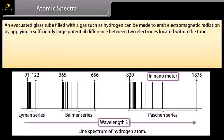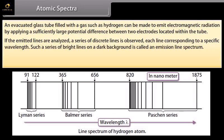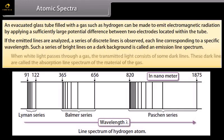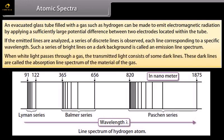Atomic spectra: An evacuated glass tube filled with a gas such as hydrogen can be made to emit electromagnetic radiation by applying a sufficiently large potential difference between two electrodes within the tube. If the emitted lines are analyzed, a series of discrete lines are observed, each corresponding to a specific wavelength. Such a series of bright lines on a dark background is called an emission line spectrum. When white light passes through a gas, the transmitted light consists of some dark lines, called the absorption line spectrum of the gas.